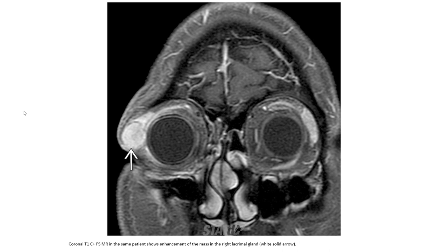On the coronal T1 post-contrast fat-saturated image of the same patient, there is enhancement of the mass in the right lateral fossa, indicated by the white arrow.